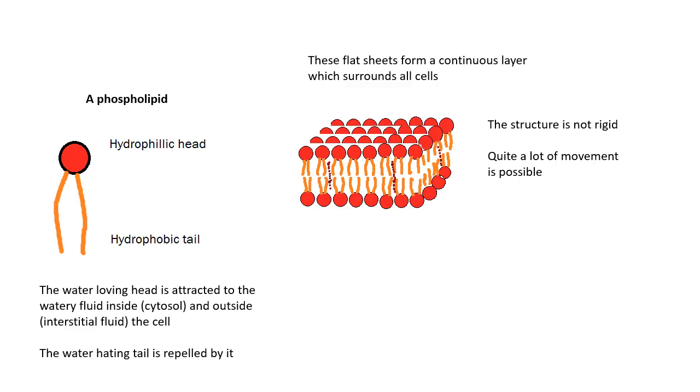A phospholipid, if you look at this molecule, we have a hydrophilic head. That means it's attracted to water. It loves water. And we have a hydrophobic tail. And that means it doesn't like water. Basically, what happens is that the water-loving head is attracted to this watery fluid outside the cell and inside the cell.